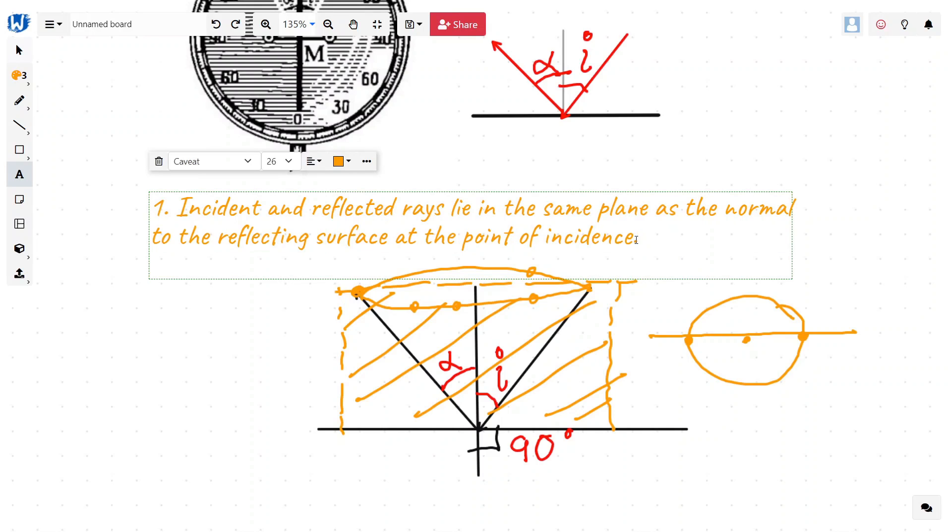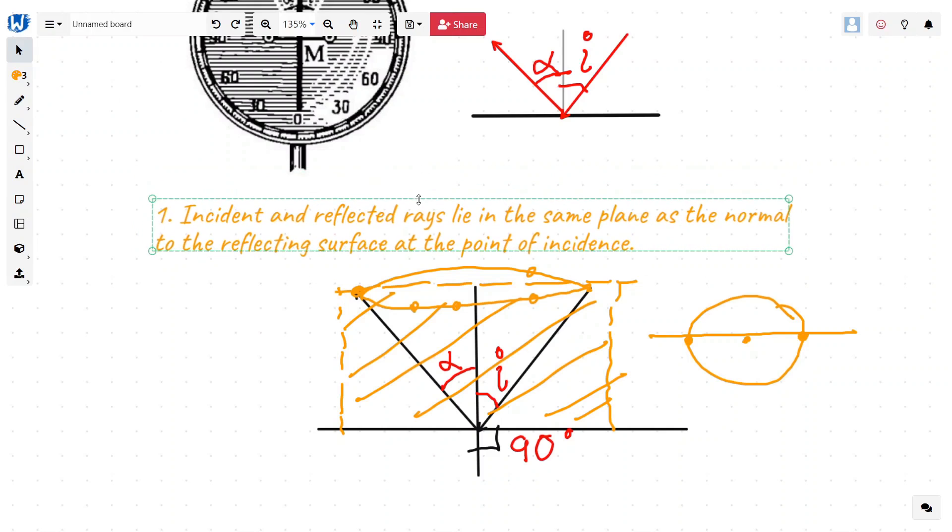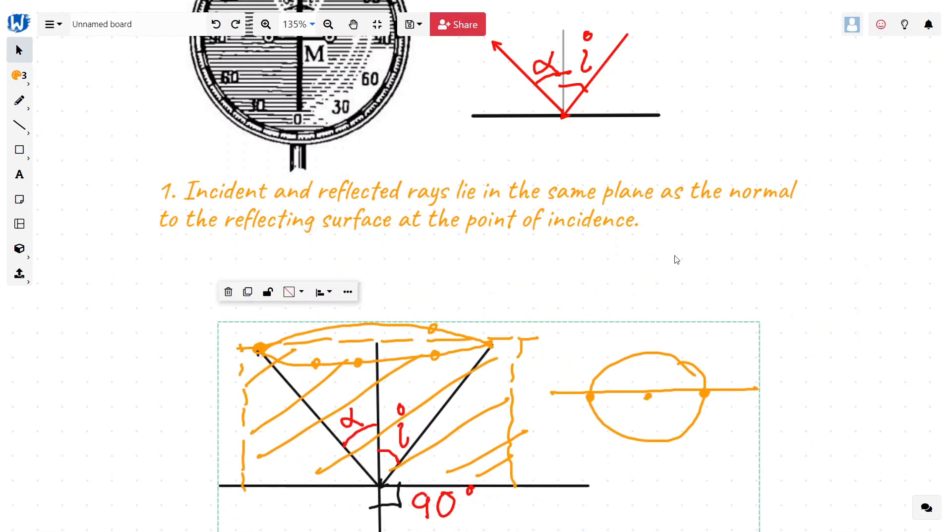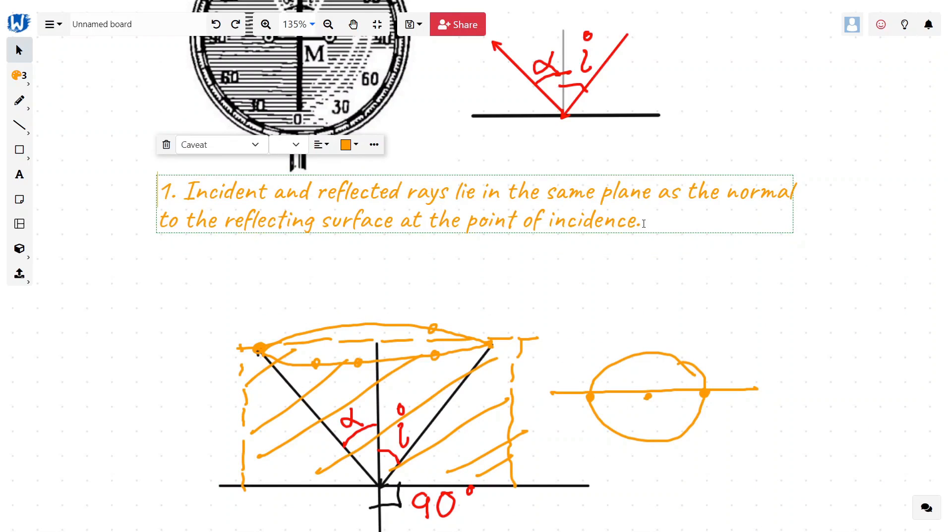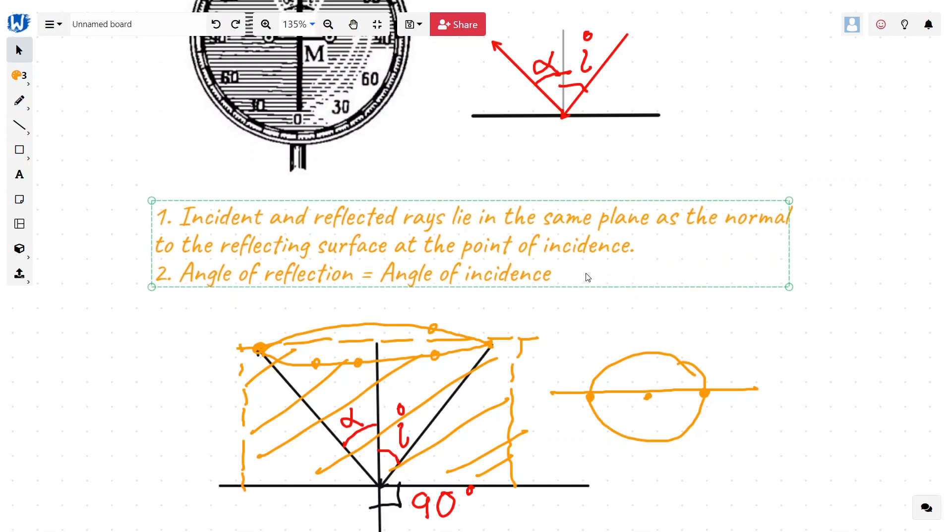Part one: angle of reflection will be equal to angle of incidence.